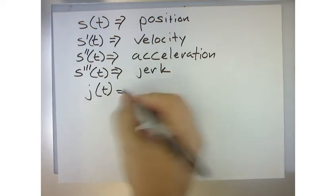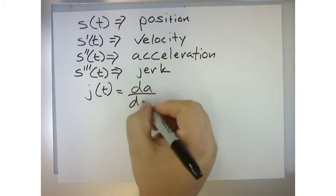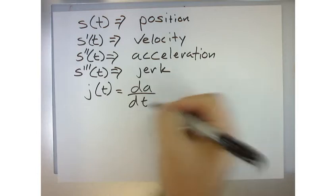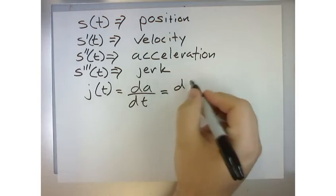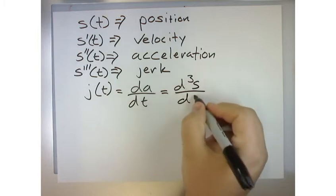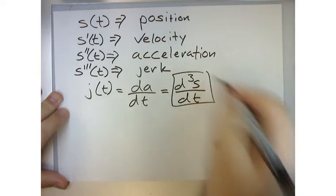And so sometimes we'll say it's the change in acceleration with respect to time. And another way that you could write this is that it is, this is another way to look at triple prime. All right. So let me, let me, I want to focus on this notation because that's what we're going to use for the next thing.